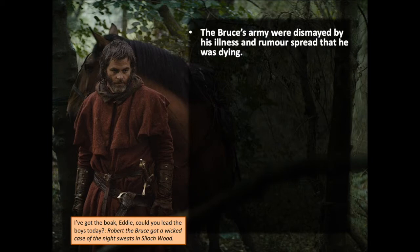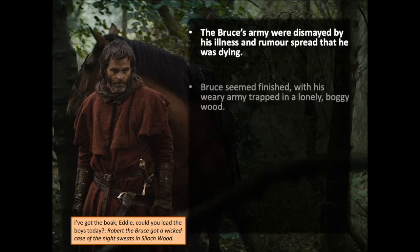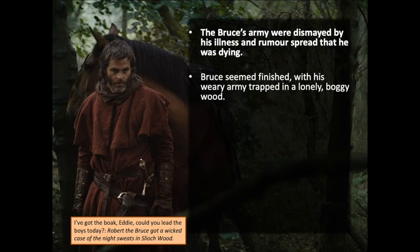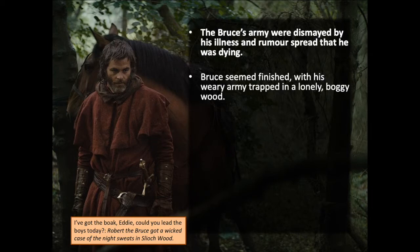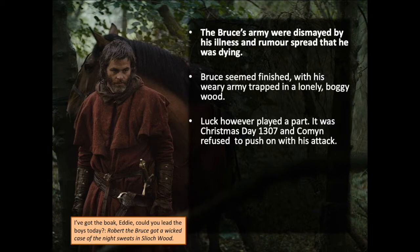Bruce was now with his weary army trapped in a lonely boggy wood. He had come up the Great Glen with around 3,000 men, but by the time they reached Slioch, his army had been depleted down to about 700 men through desertions and losses, dispirited by how the campaign was going and by the king's illness. Luck, however, was finally going to play a part for Bruce. It was Christmas Day 1307 and because it was a holy day, Comyn refused to push on with his attack — giving Bruce's army breathing space. This was a fatal mistake.